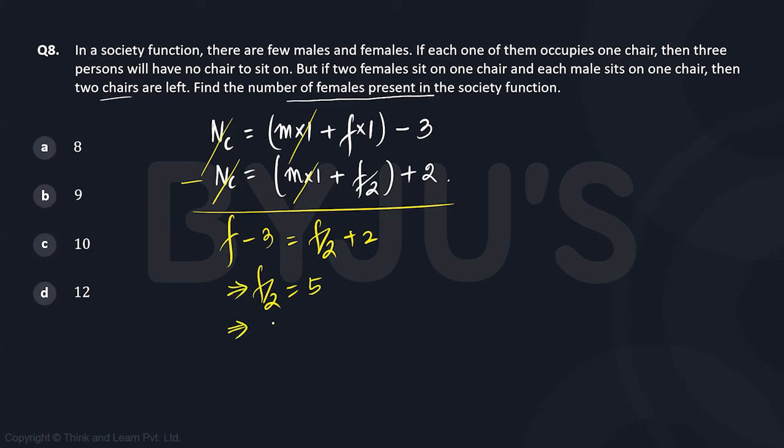is 5, or we will have total number of females equal to 10. C is our answer.